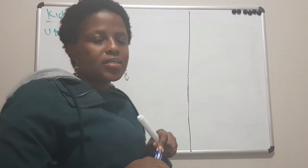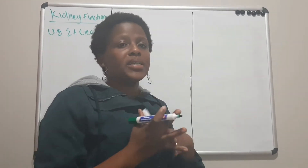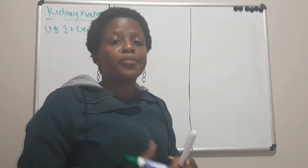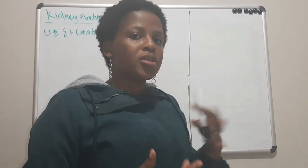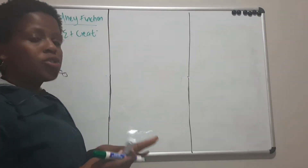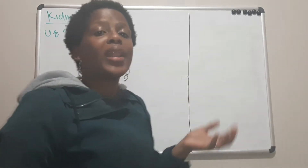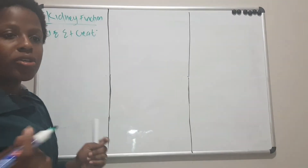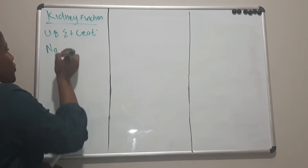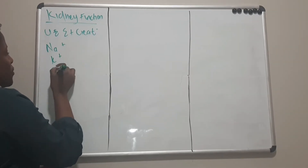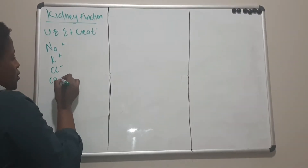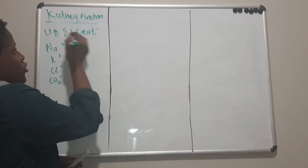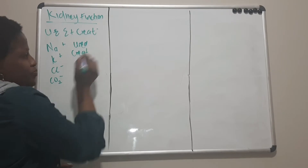I will write the tests in their abbreviations as much as possible and then as we continue with the course we will unpack each test when we get there so that we do not waste time. So U&E: the U stands for urea, the E stands for electrolytes, plus creatinine. The electrolytes that we usually do are sodium, potassium, chloride, and bicarbonate. They will also do the urea and creatinine.